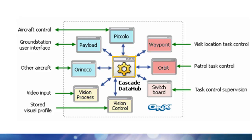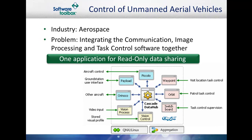The Data Hub's ability to restrict write privileges to shared variables avoids many of the difficulties associated with multiprocess management. As a side note, the Data Hub can communicate with more than just Linux and QNX. Any operating system that can open a TCP socket, send a text command, and parse the response can communicate with the Data Hub.